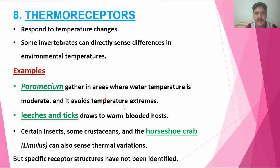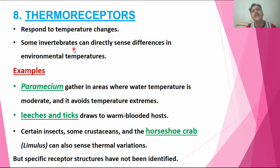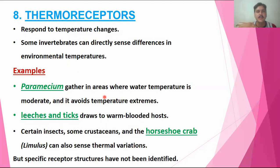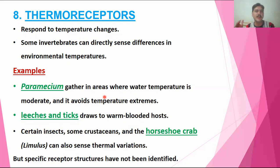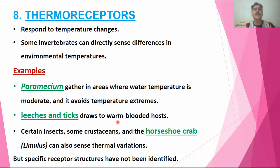Now I am going to discuss the next receptor — thermoreceptors. Thermo means heat; thermoreceptors are structures that receive the stimulus of heat. Any change in the temperature of the surrounding environment can be received by these receptors. Many invertebrates are directly sensitive to temperature because they survive at a constant or optimum temperature. When the temperature increases or decreases from that optimum range, leeches and ticks, for example, move toward warm-blooded animals, sensing body heat radiation and moving in that direction to feed.